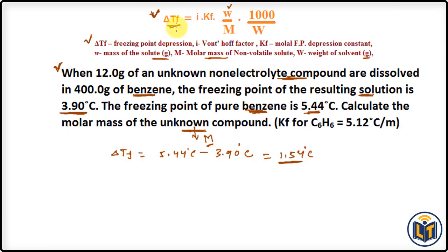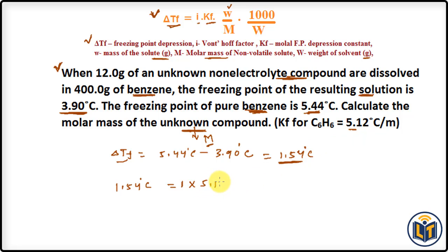We have Delta TF equal to 1.54°C. Setting up the formula: this equals i times KF times (w / M) times (1000 / W). The i value for a non-electrolyte compound is 1 because it does not dissociate into ions. KF for benzene is 5.12°C per molality. The mass of solute, w, is 12.0 grams.